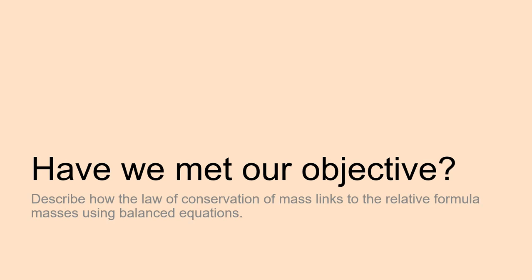Okay, finally. Have we met our objective? So, describe how the law of conservation of mass links to the relative formula masses using balanced equations. So, we've got all the tools we need now to answer this question. So, the law of conservation of mass states that the mass of all of the reactants in an equation must equal the mass of all products in a balanced chemical equation, and that's because we can't make or destroy things. So, if we were looking and we balanced an equation we could add up all of the relative formula masses on one side and all the relative formula masses on another side and they would be equal. And that's what we were learning today. So, thank you very much and I will see you in school again soon.